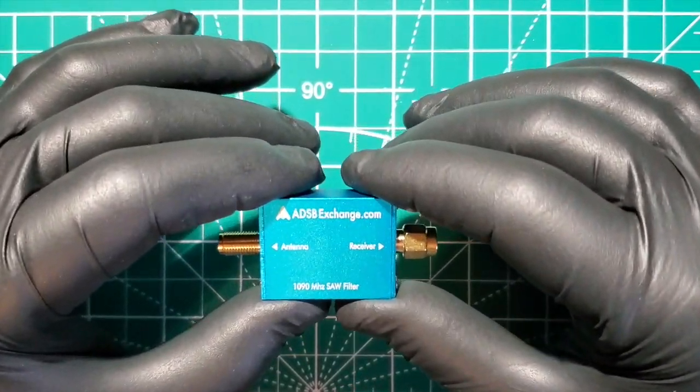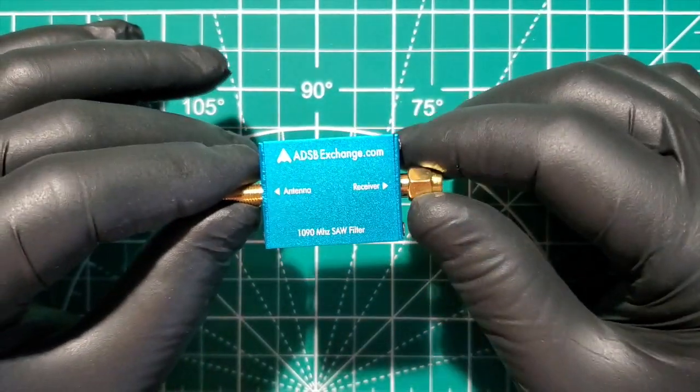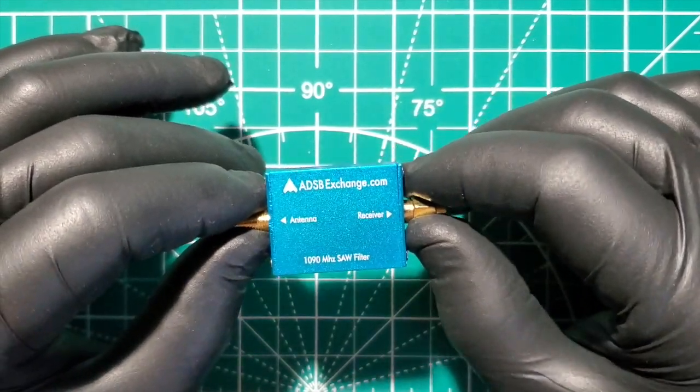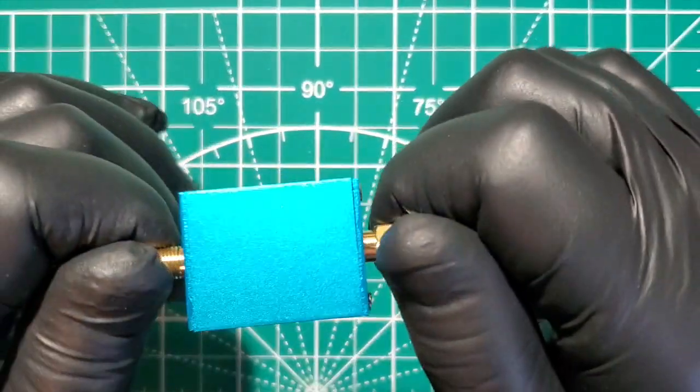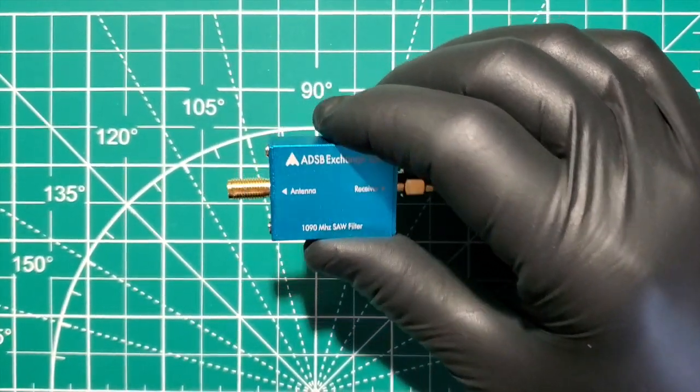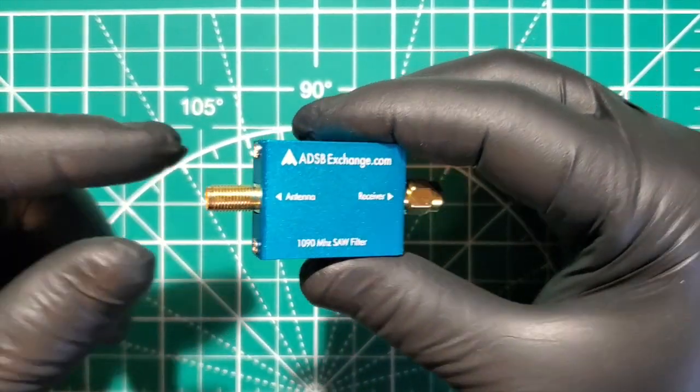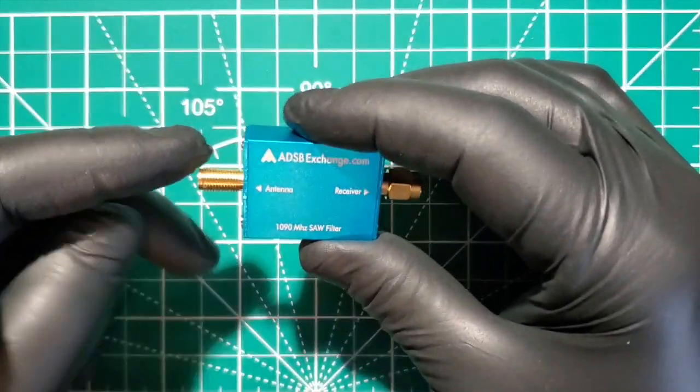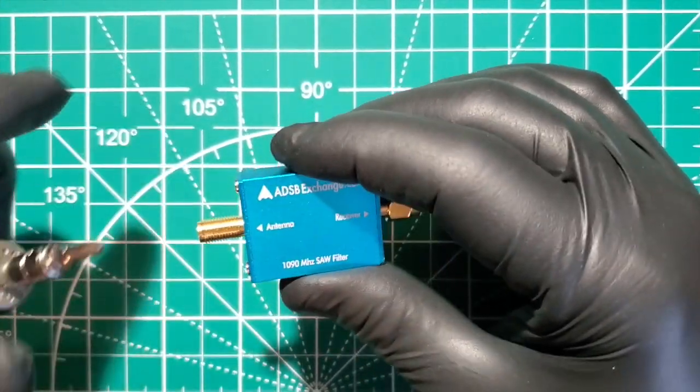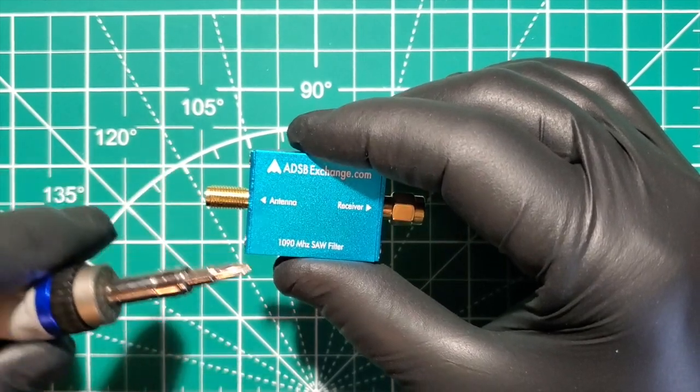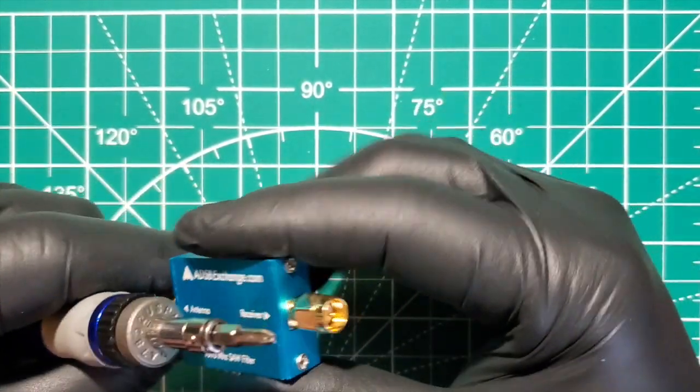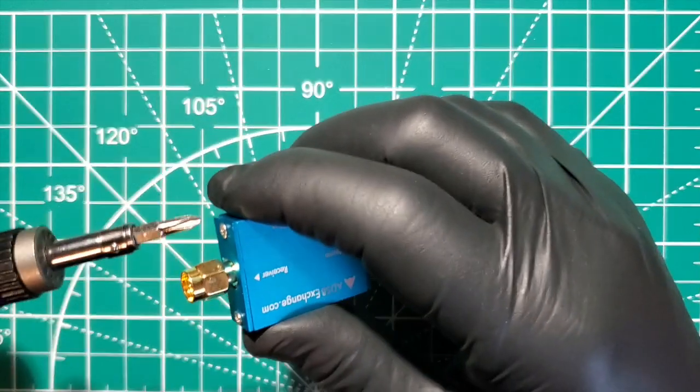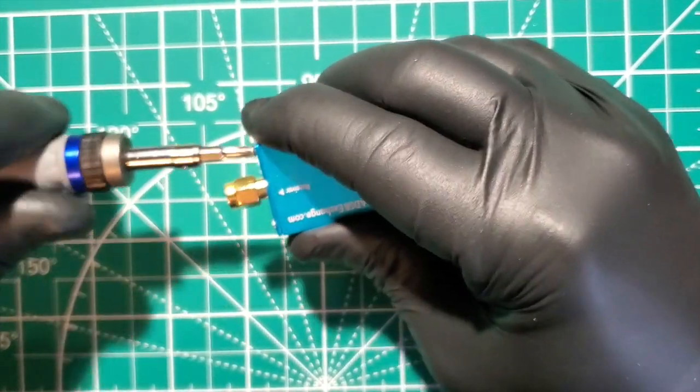with a dongle and you want to receive ADSB signals, this will definitely help out if you're in a situation where you've got a lot of interference. You want to block everything else out except for 1090 megahertz. So we're going to look inside this and see what it looks like.